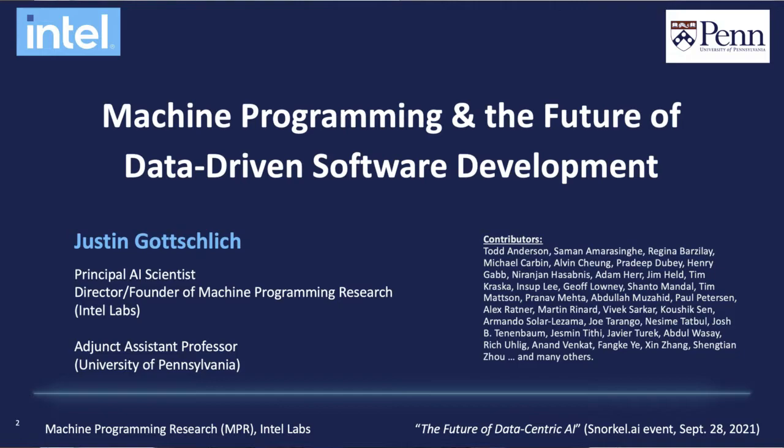Our next speaker serves as adjunct assistant professor at the University of Pennsylvania. He received his PhD in computer science from the University of Colorado Boulder, has over 40 peer-reviewed publications, and holds over 50 patents with over a hundred patents pending. Please join me in welcoming the principal AI scientist and director and founder of Machine Programming Research at Intel Labs, Justin Gottschlich.